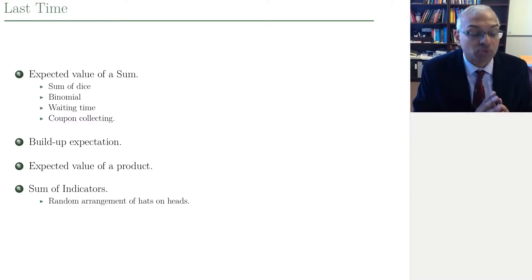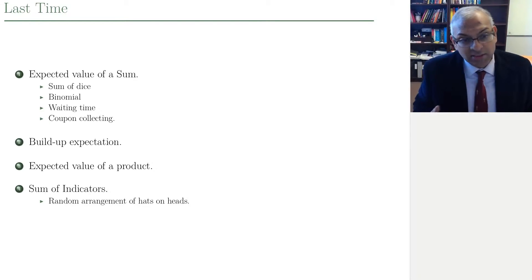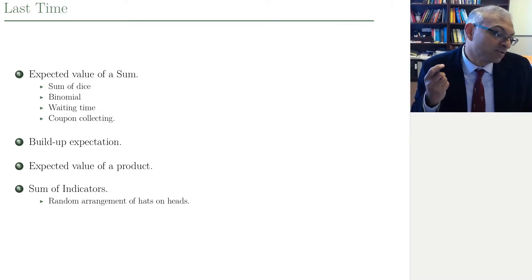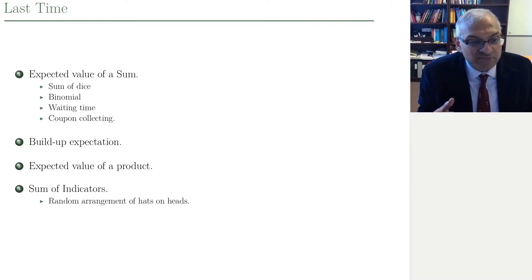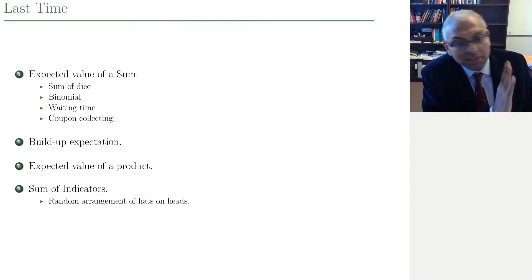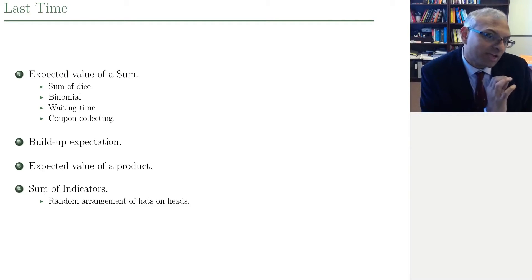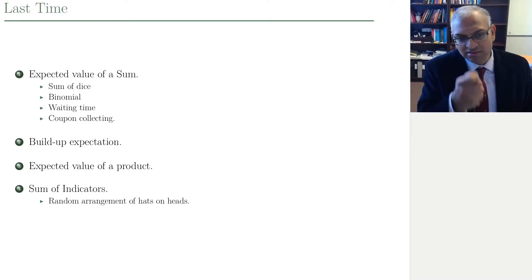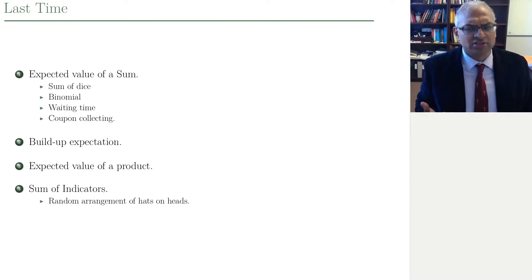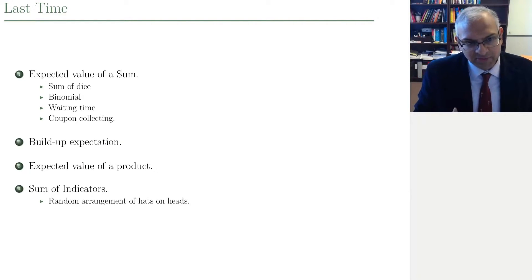Then we talked about the law of total expectation and how that can be used to compute expectations in a build-up fashion. Finally, we discussed this novel concept of indicator random variables, which are the binomial random variables that become very useful if you can represent your random variable as a sum of indicators. The expected value is then the sum of the expected values of the indicators, and the expected value of an indicator is very easy to compute — it's just the probability of success for that indicator. So be on the lookout for sums of indicator random variables.